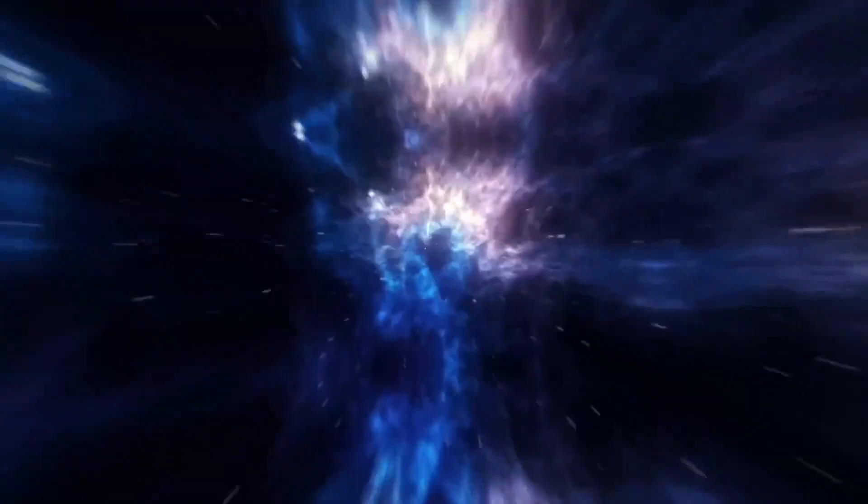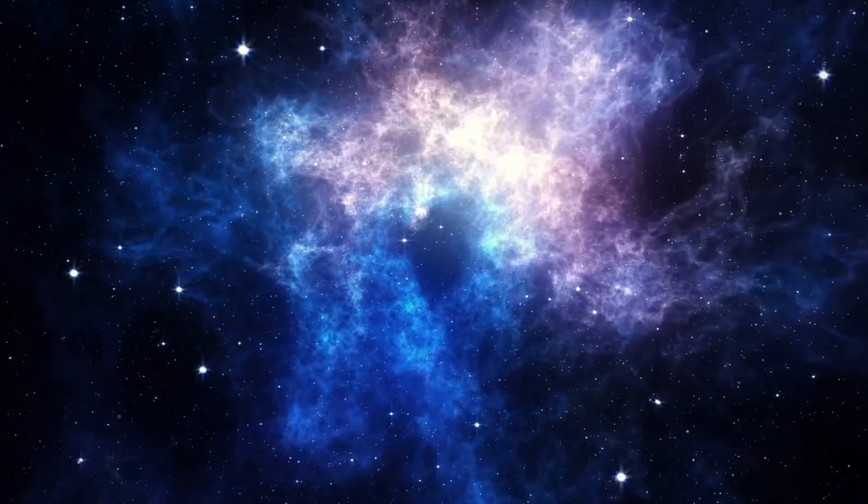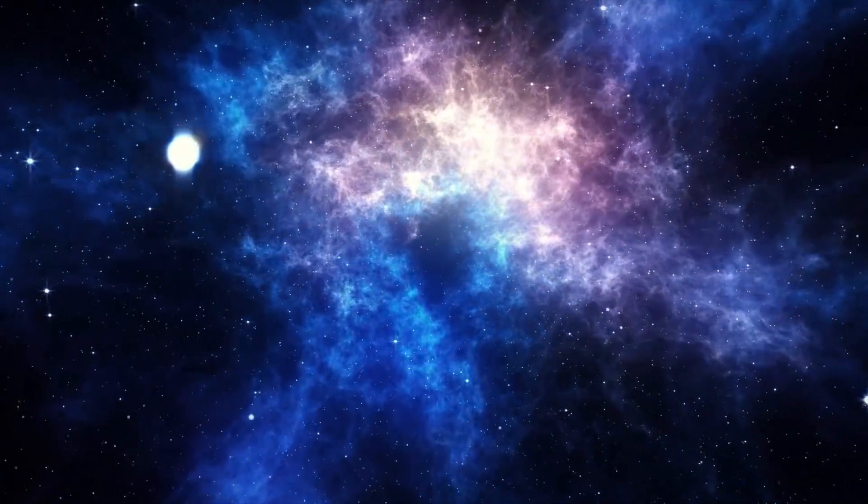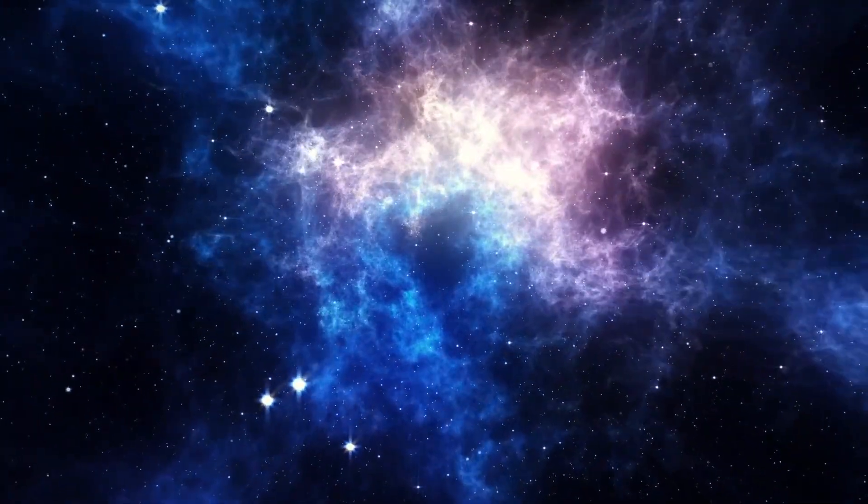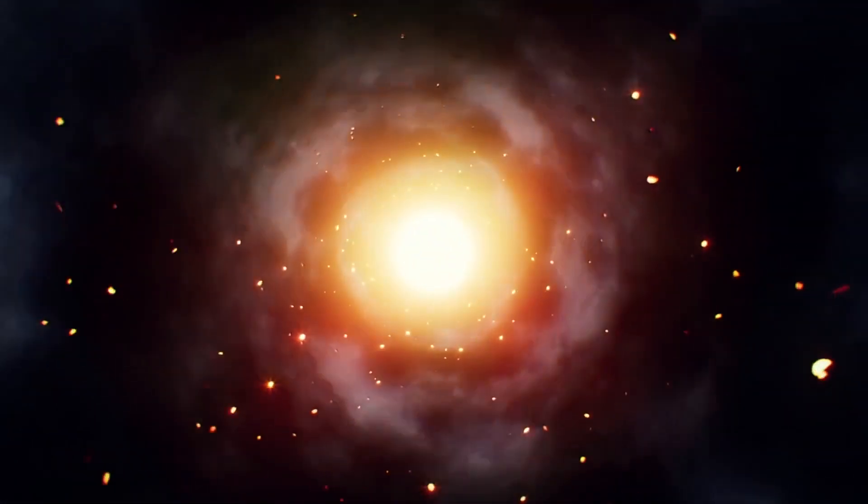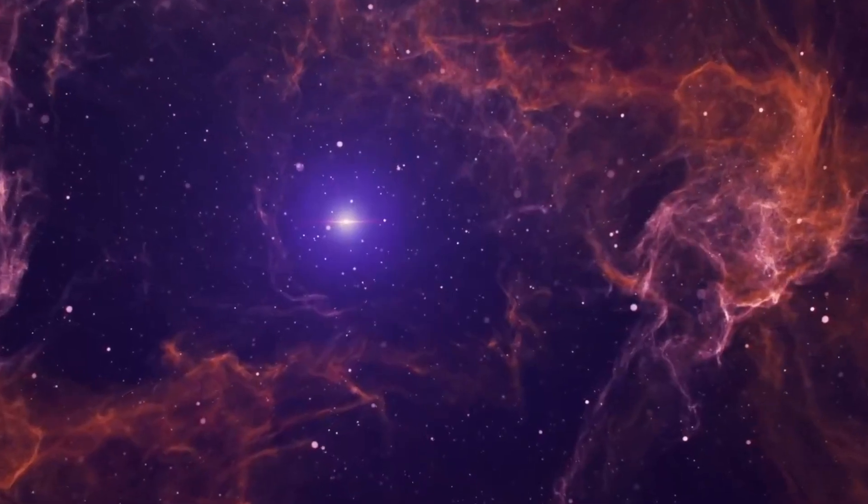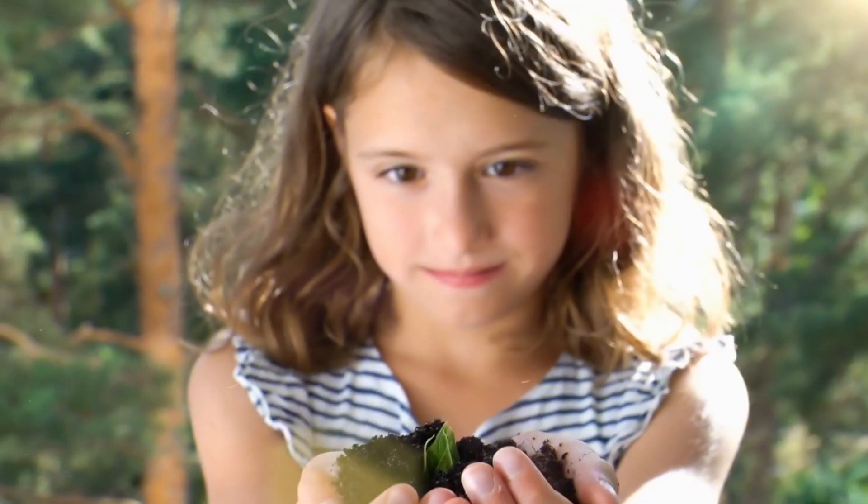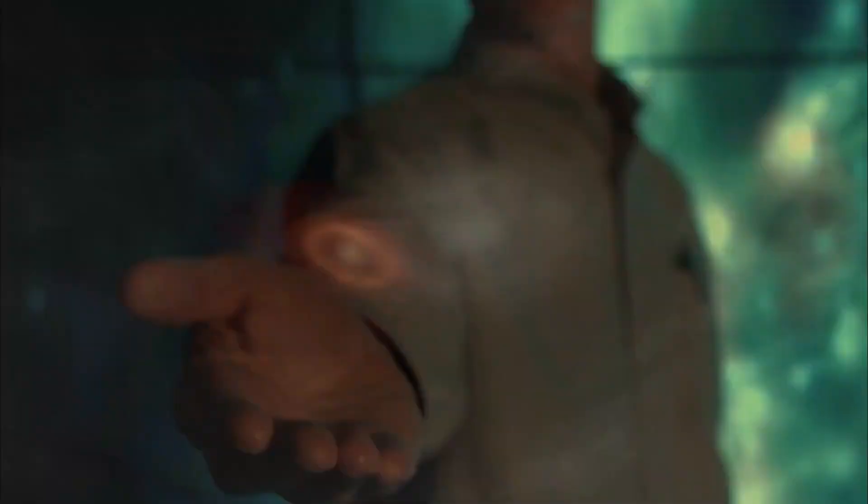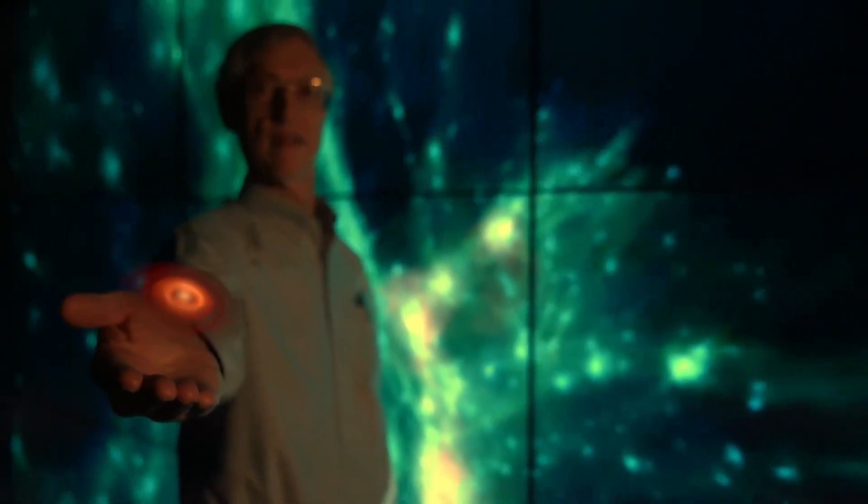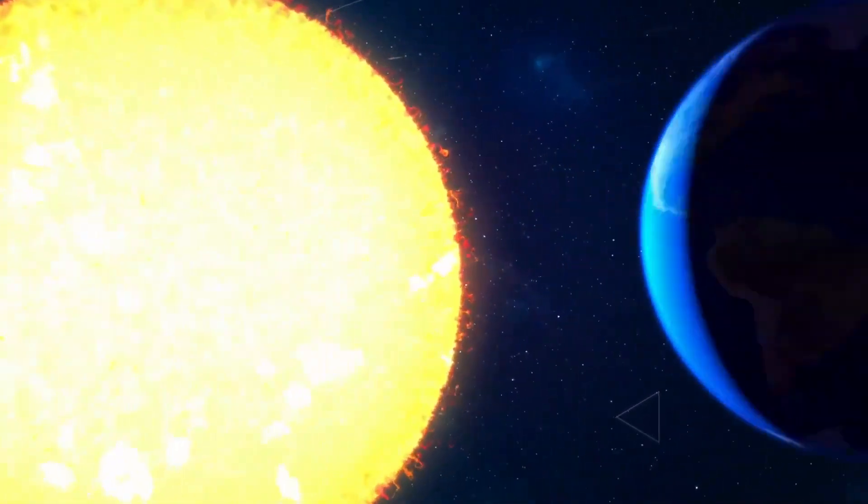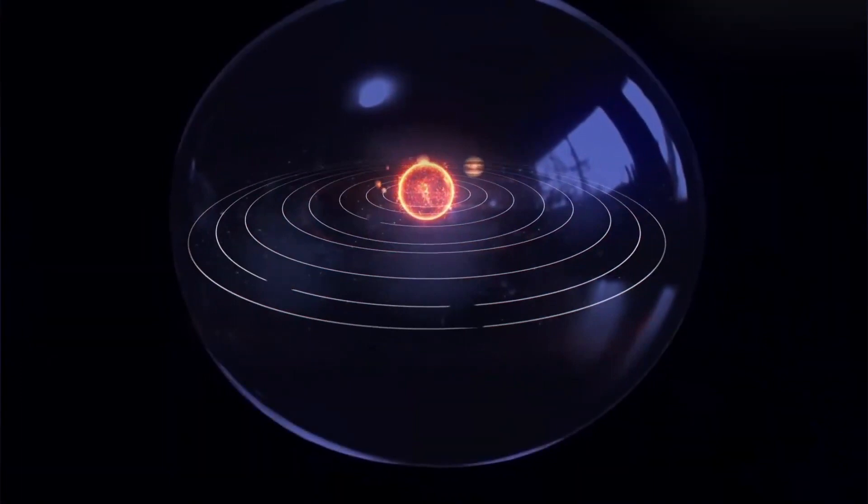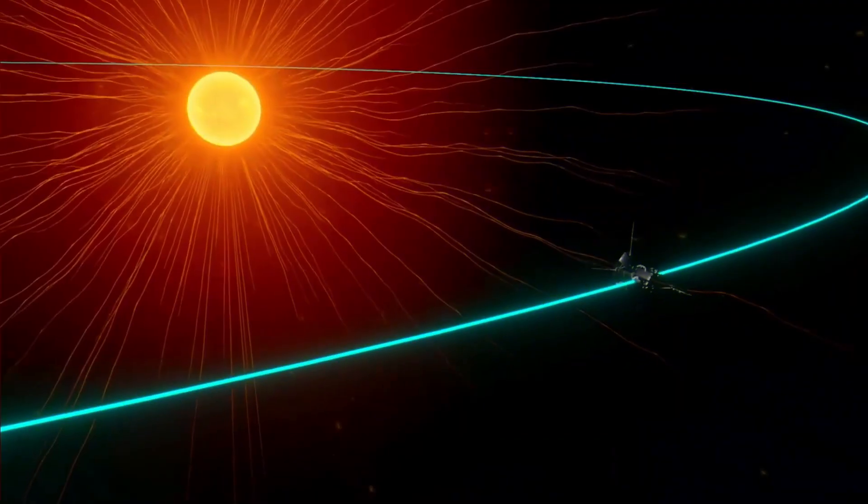The 5,000-plus planets found so far include small, rocky worlds like Earth, gas giants many times larger than Jupiter, and hot Jupiters in scorchingly close orbits around their stars. There are Super Earths, which are possible rocky worlds bigger than our own, and mini-Neptunes, smaller versions of our system's Neptune. In addition, add to the mix planets orbiting two stars at once, and planets stubbornly orbiting the collapsed remnants of dead stars.